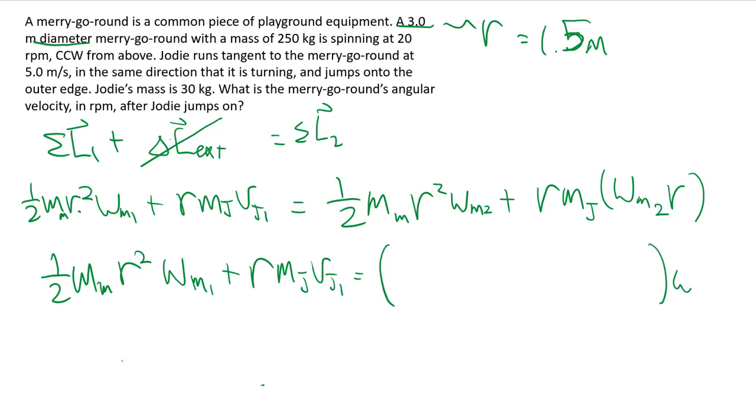You notice that we can actually factor out omega_m2 here. And what we end up with is an m_j r squared term.